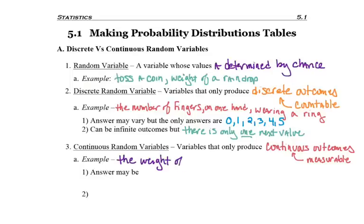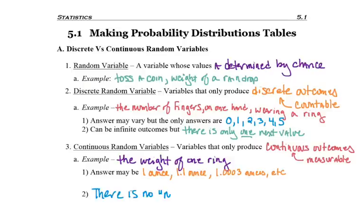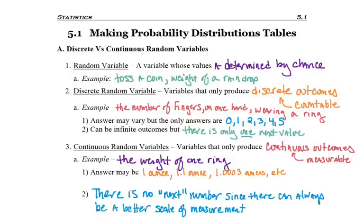In this case, I could use the example of the weight of one of those rings. The weight itself would be continuous, because answers could be a gazillion answers. It could weigh one ounce, 1.1 ounce, 1.0003 ounces. There's a million different answers for what that ring could weigh. Because basically, there's no next number, since there can always be a better scale of measurement.